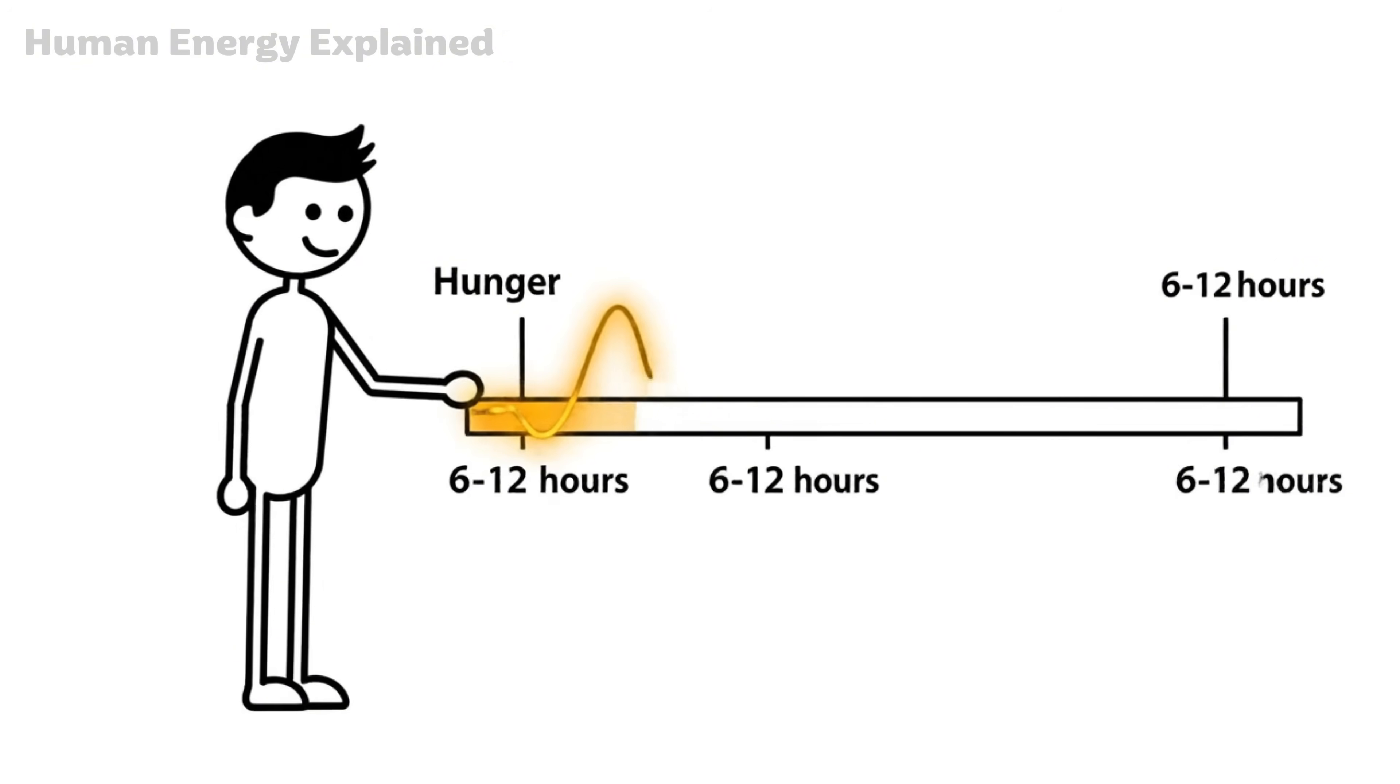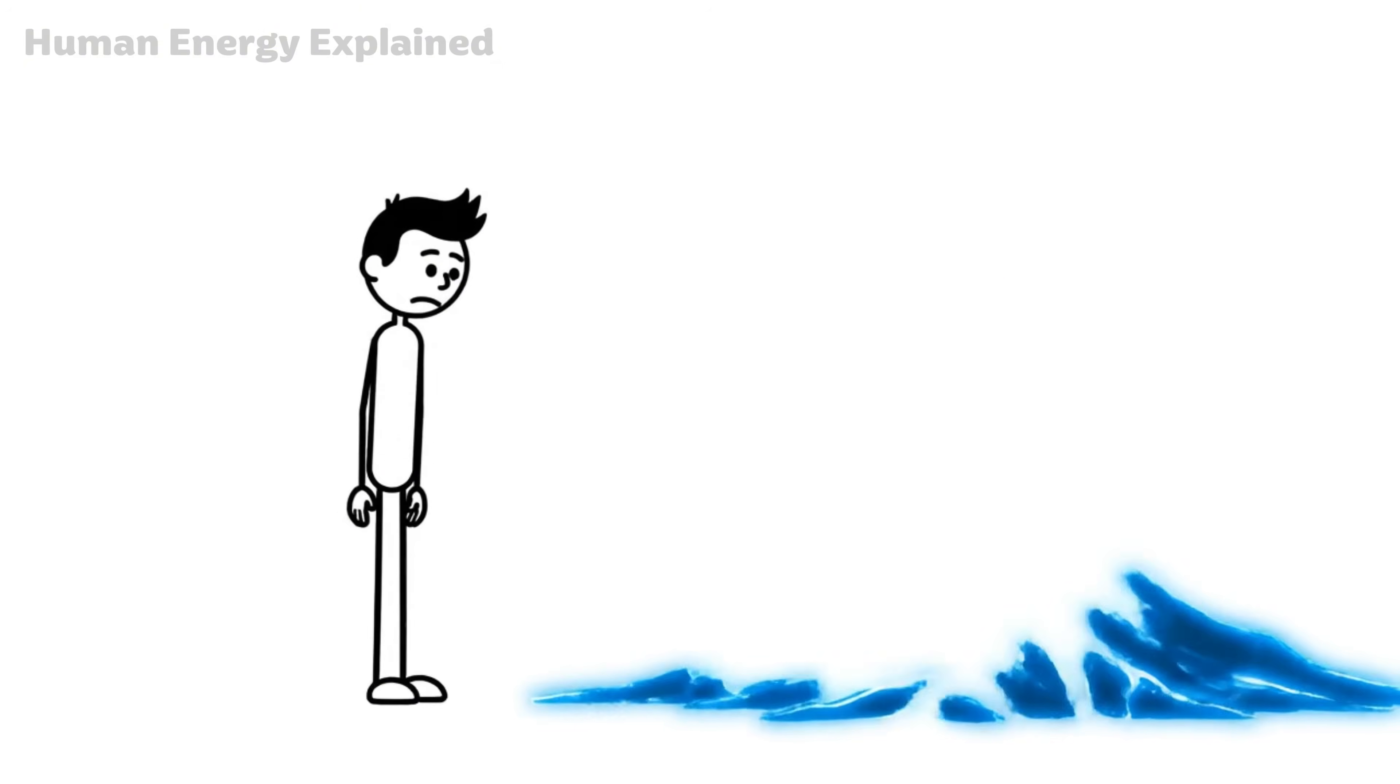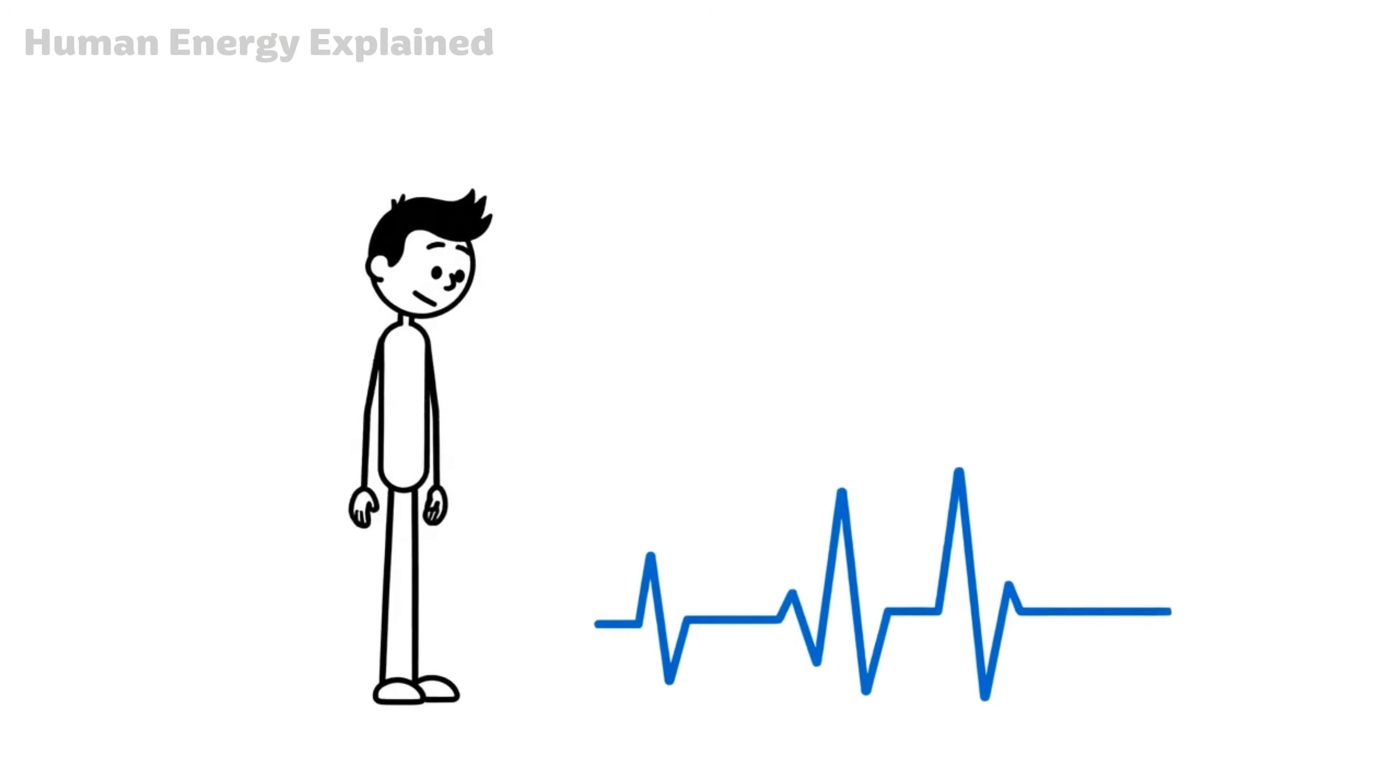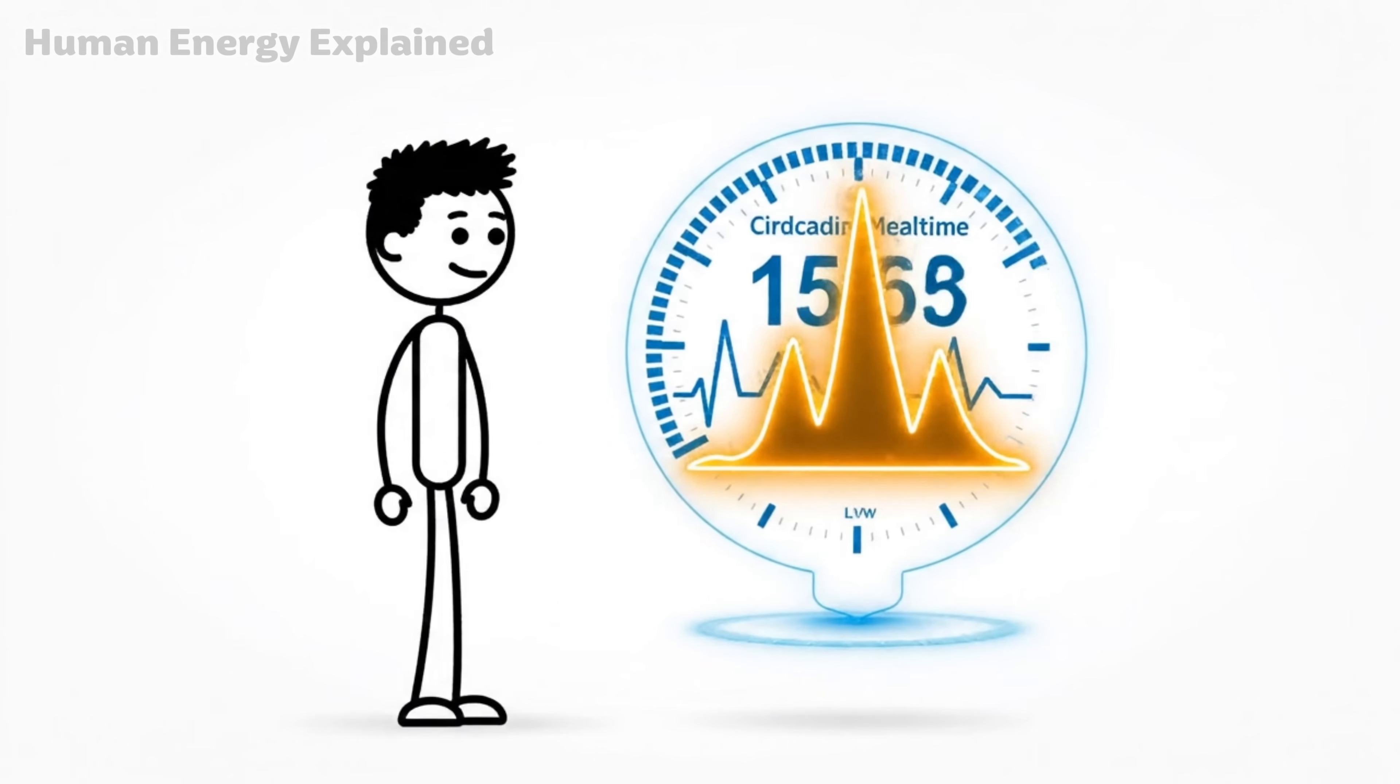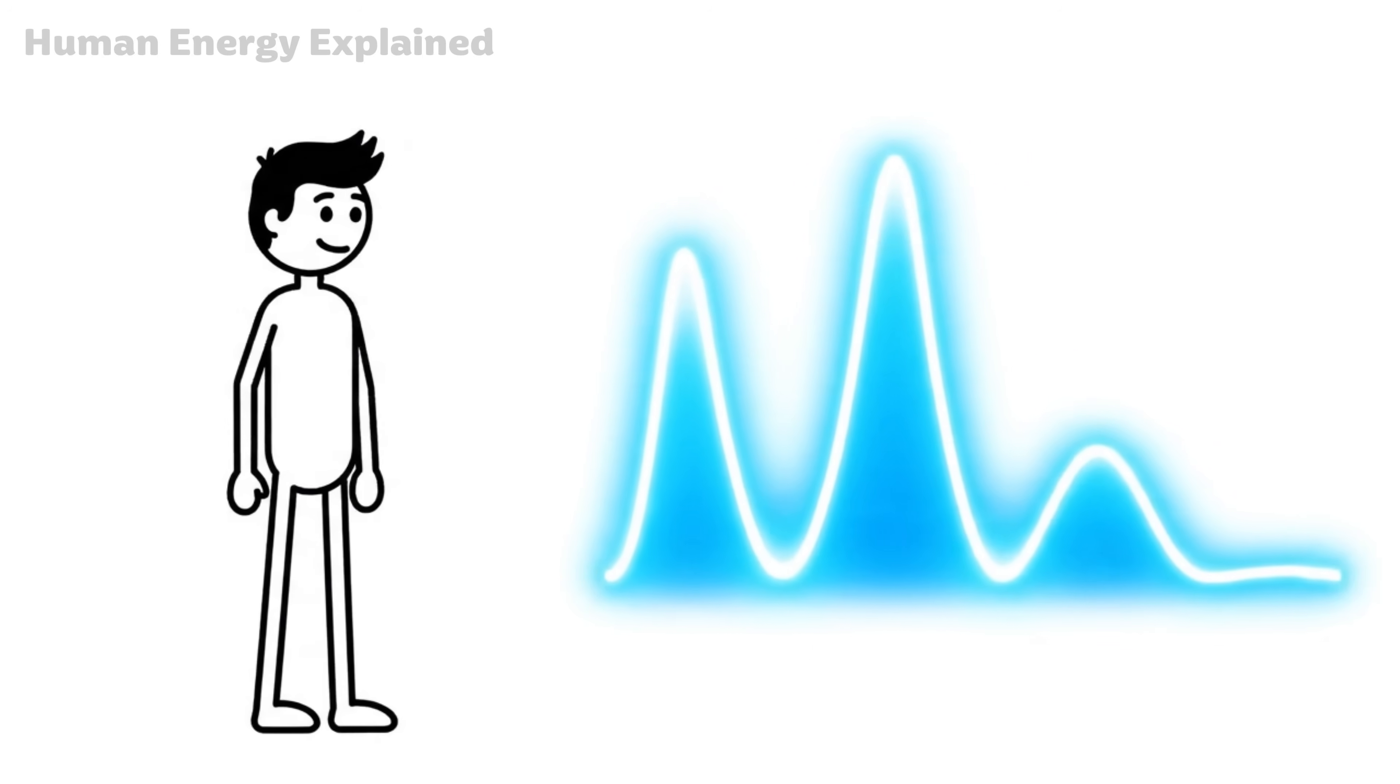By hour 6 to 12, something interesting happens. Hunger doesn't keep climbing, it actually comes in waves. You expect it to build and build until it becomes unbearable, but that's not how your body works. Ghrelin, the hormone responsible for hunger signals, spikes around your usual mealtimes. Then it falls, then it spikes again, then it falls again. Each wave a little smaller than the last.